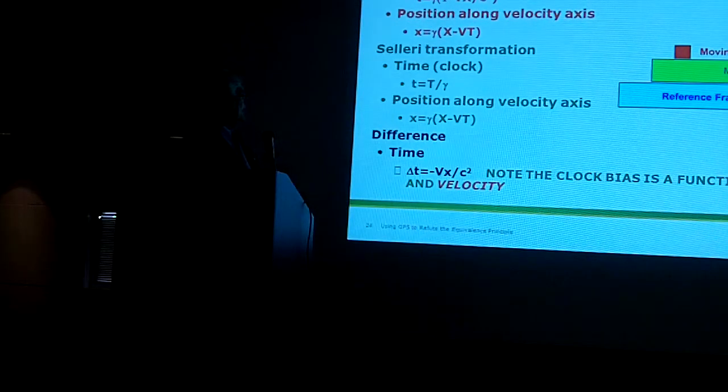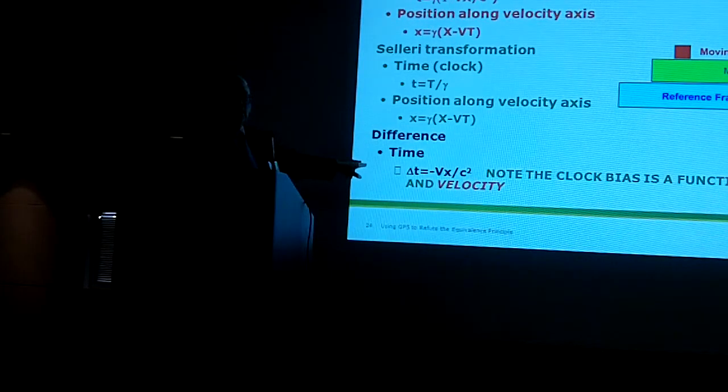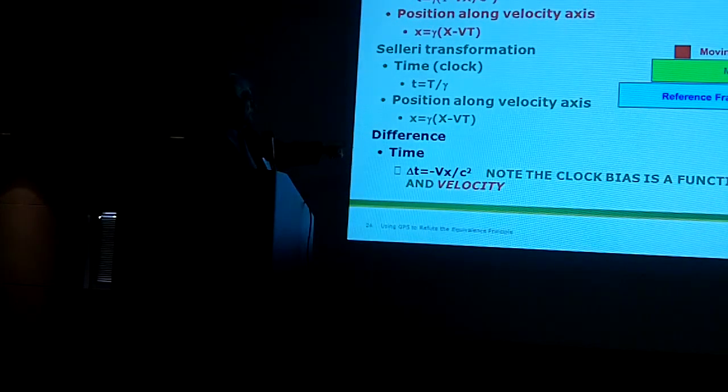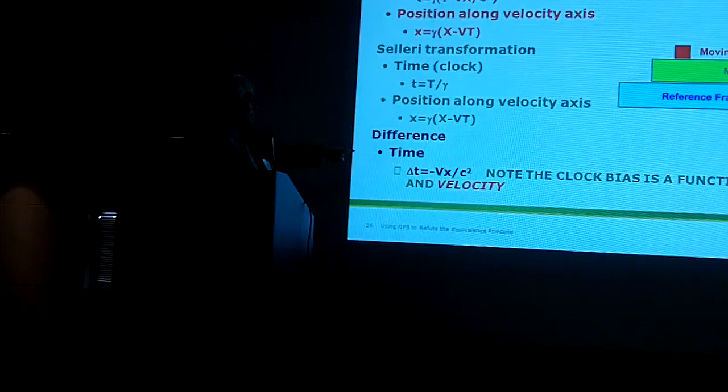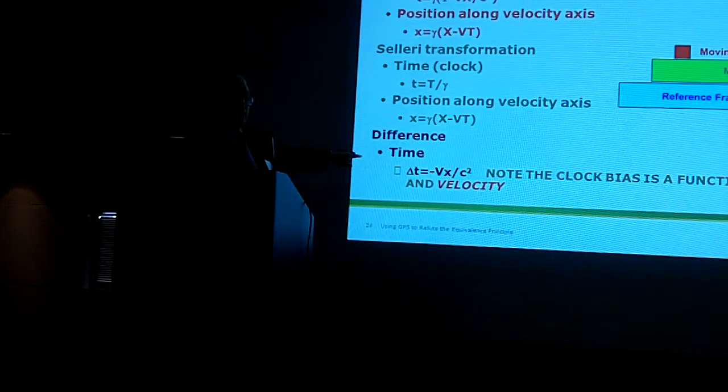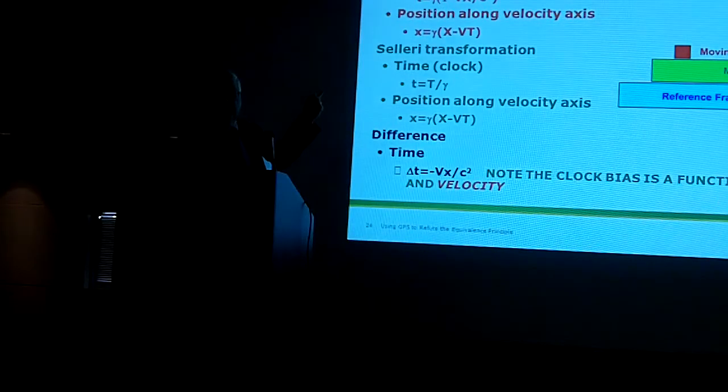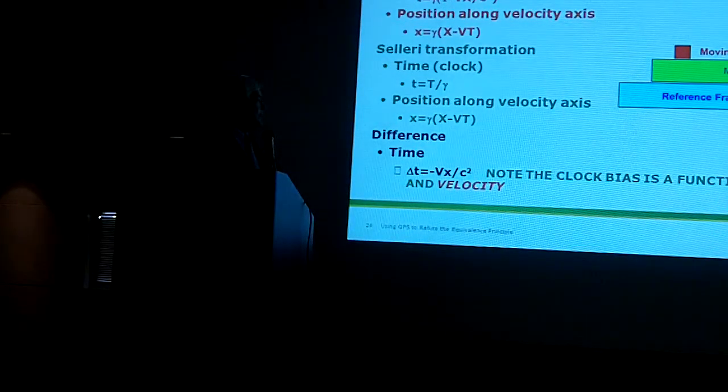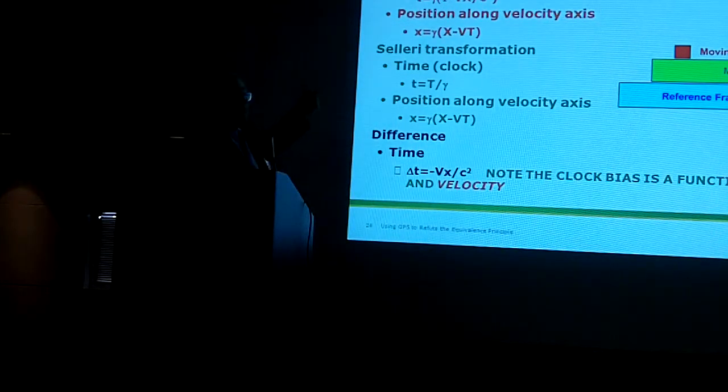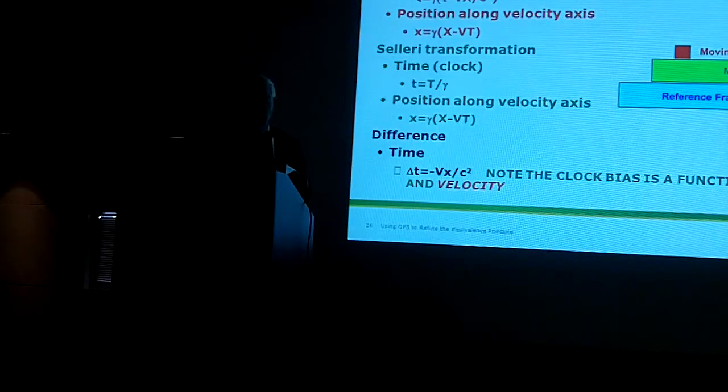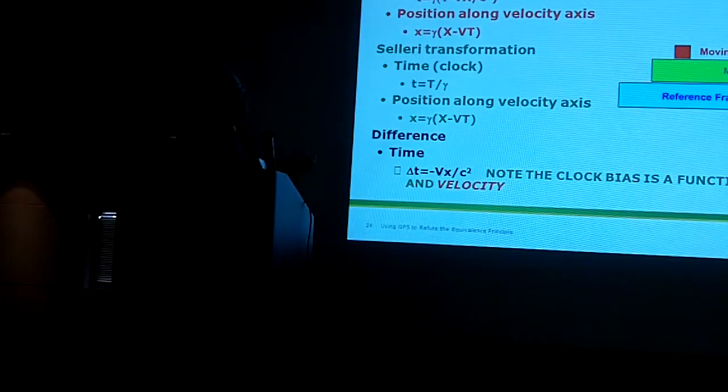In any case, the difference in time, it turns out, is exactly equal to that term, including the velocity of the Earth and the X position in the Earth's frame that we derive from that slide just in front. So there is a clock difference between the Lorentz and the Celery transformations. That is exactly that clock bias term.